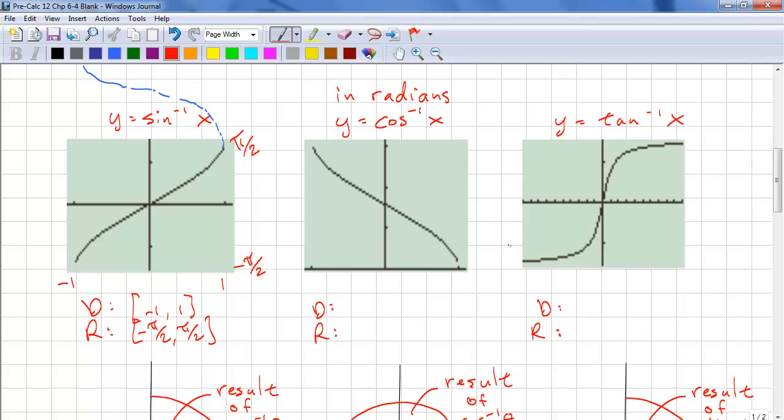Inverse cosine. Again, our domain is negative 1 to 1 because that's the range of cosine. Our range now goes from 0 to pi. So this is in the principal angle. That makes it easy.